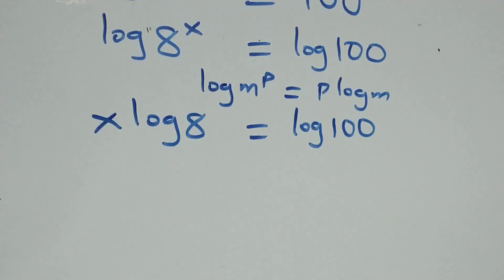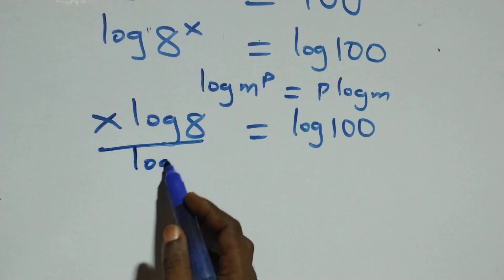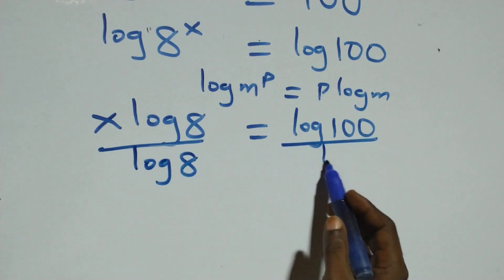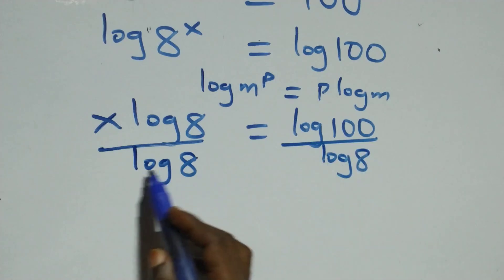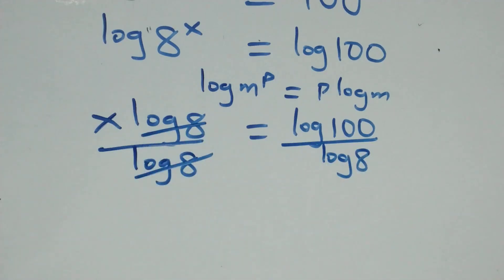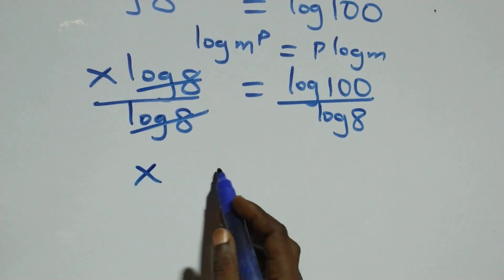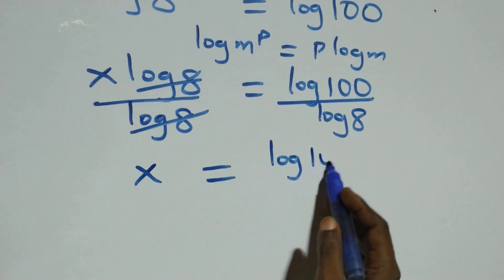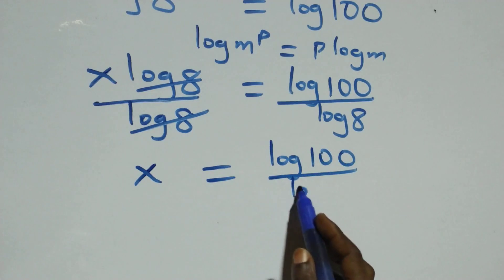The next step: we divide both sides by log 8. Log 8 cancels on the left, and we have x left, which equals log one hundred over log 8.